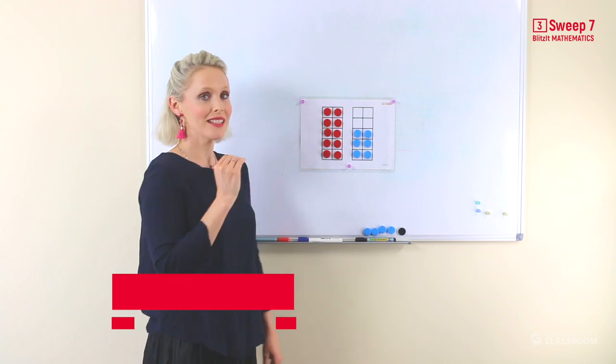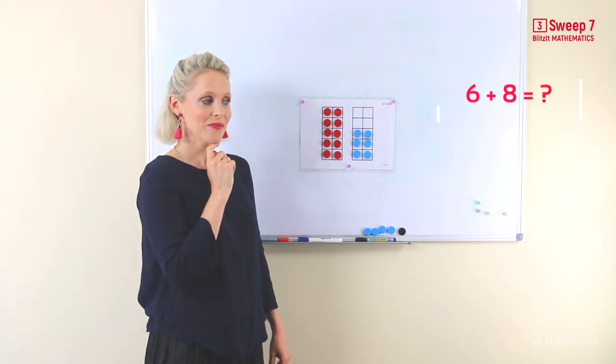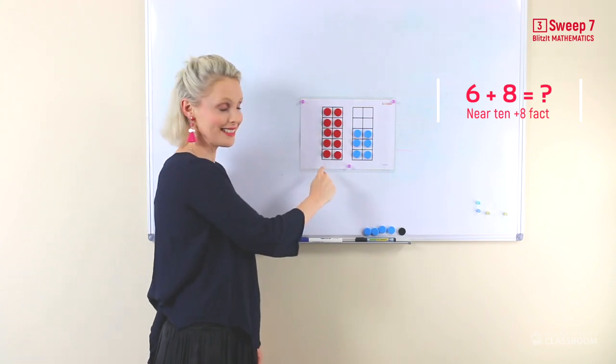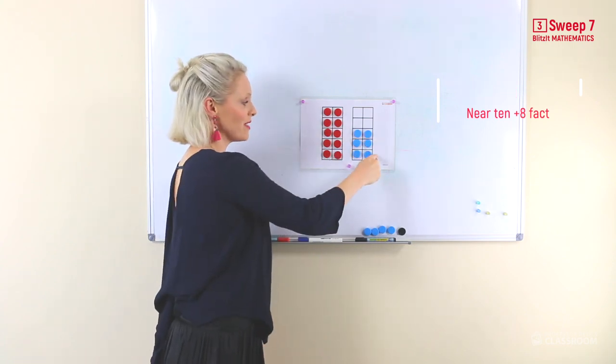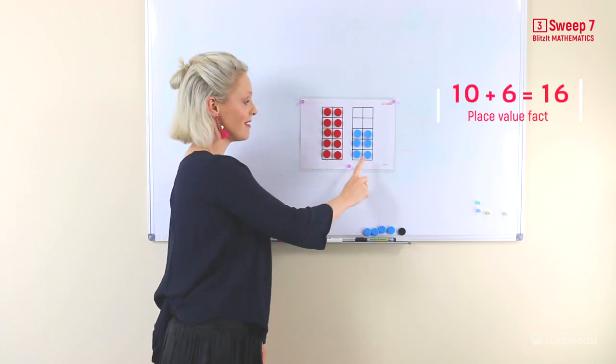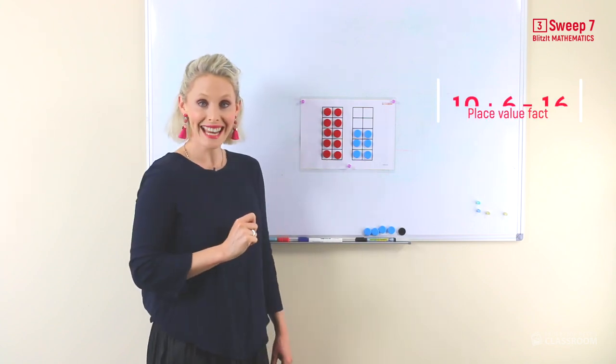Here we have 6 add 8. Now we go to the 10 first, we make 10 and we have 6 there and that equals one group of 10, 6 ones, 16. Well done!